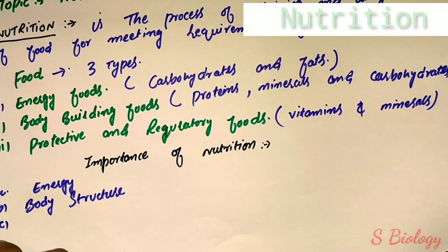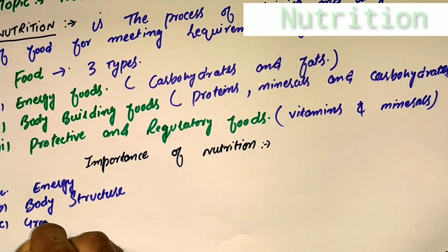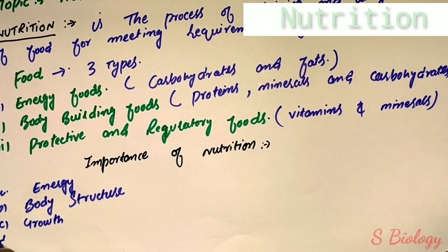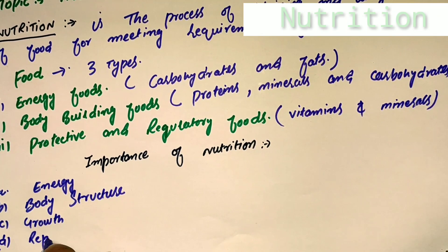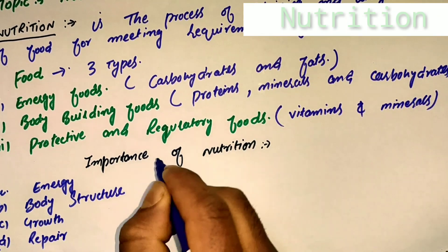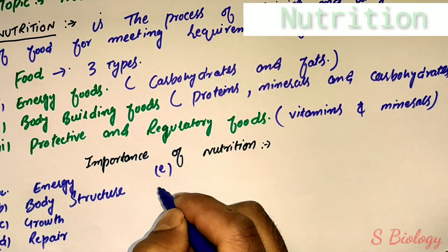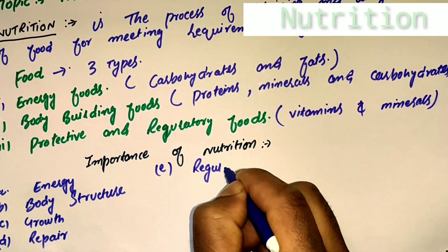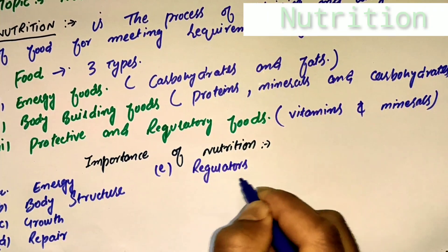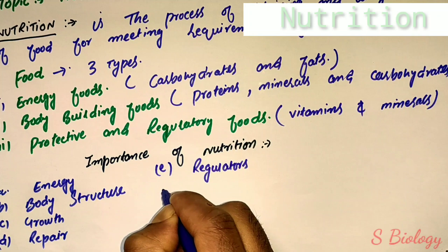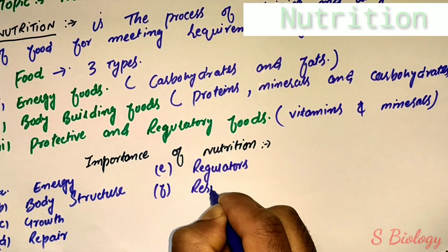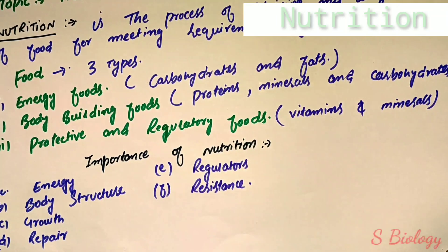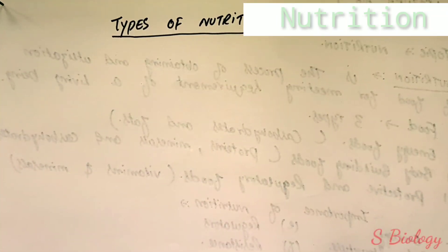The fourth importance is repair: food provides material for replacement and repair of worn-out or damaged structures. Regulators, such as hormones and enzymes, regulate body functions and control metabolism. Resistance: food supports our defense system and body immune system. Reproduction: our reproductive structures are also formed with the help of food.